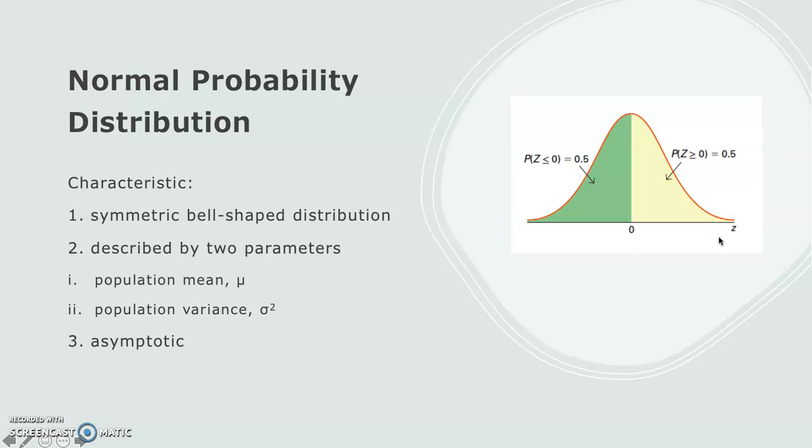Furthermore, as with other probability distributions, the horizontal axis contains the random variable denoted as x, where the center is the mean value of the population. However, for the normal probability distribution, x is then transformed into the z value. That is why the horizontal line here contains the z-value or the standard normal value. These are the characteristics of the normal probability distribution.